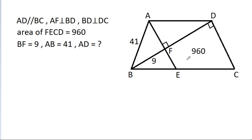In this video, we have given that area of FECD is 960, BF is 9, AB is 41, then we have to find AD.